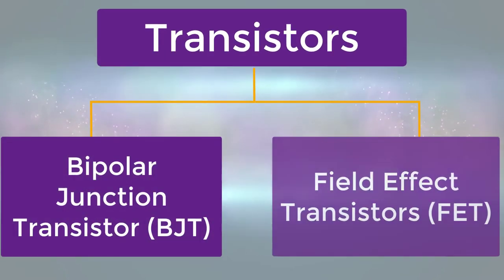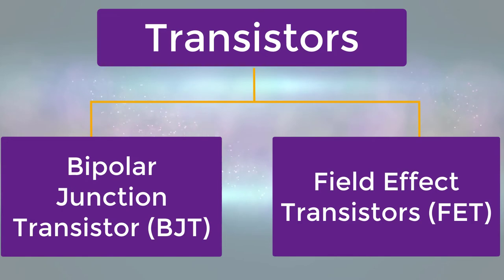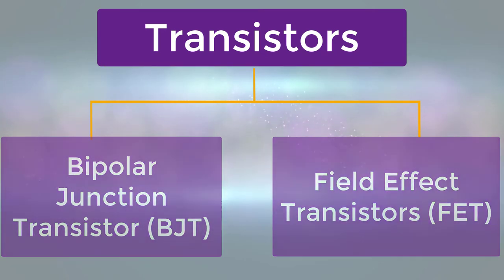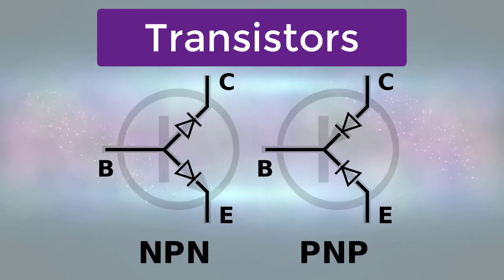The transistors are of two types, namely Bipolar Junction Transistor BJT and Field Effect Transistor FET. And further, these can be PNP and NPN transistors.